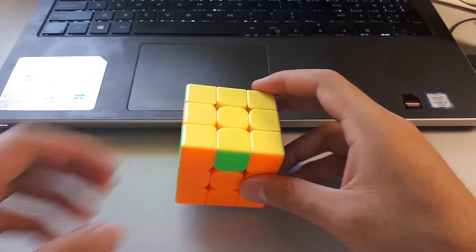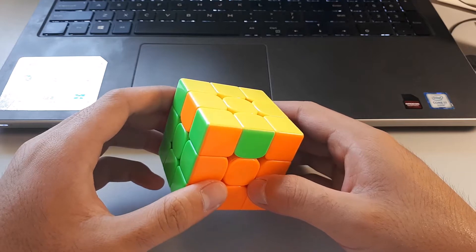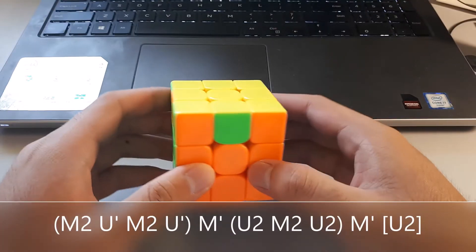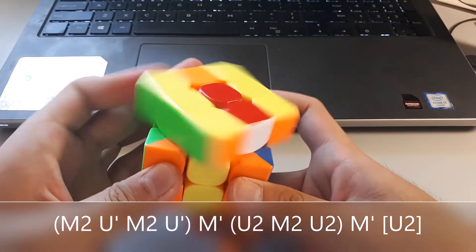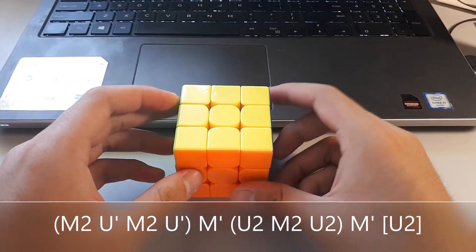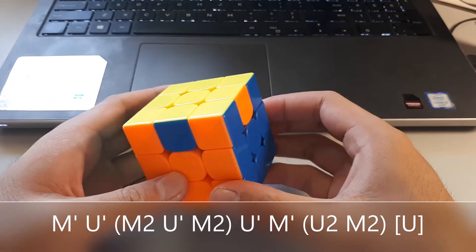In terms of algorithms, there's actually two good ones for the Z perm. The first one I'm going to show is the one I actually use. So it goes like this. However, another way to do Z perm is this algorithm.